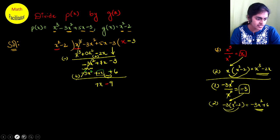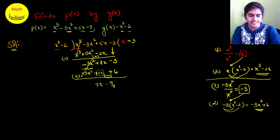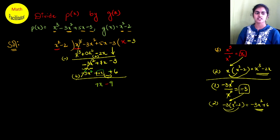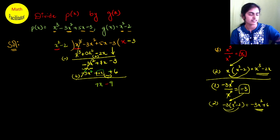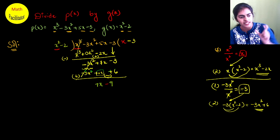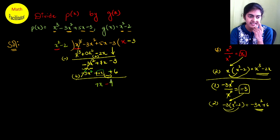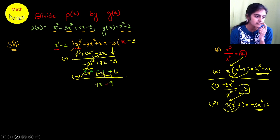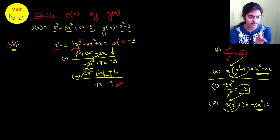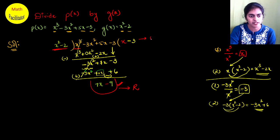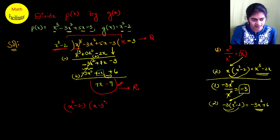You now have 7x - 9. This is your remainder — you stop the division here. The reason is that 7x - 9 is a linear polynomial of degree 1, while the divisor has degree 2. Whenever the degree of the remainder is less than the degree of the divisor, you stop. So the quotient is x - 3 and the remainder is 7x - 9. To verify: (x² - 2)(x - 3) plus the remainder 7x - 9 should give you back the dividend x³ - 3x² + 5x - 3.